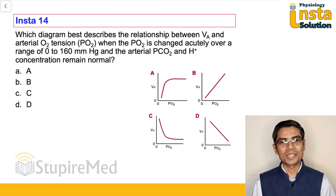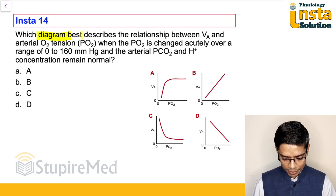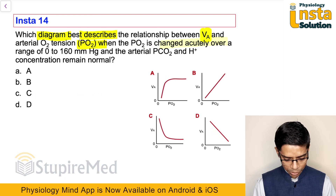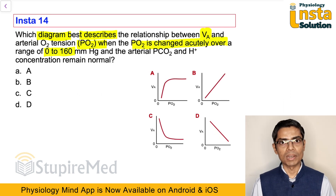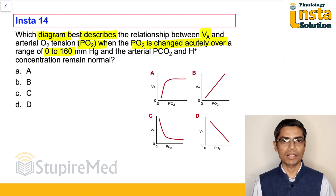Hello students, we are going to discuss question number 14. The question is: which diagram best describes the relationship between ventilation and the oxygen tension when the oxygen is changed acutely from 0 to 160 millimeters of mercury, keeping the partial pressure of carbon dioxide and H+ ion constant.